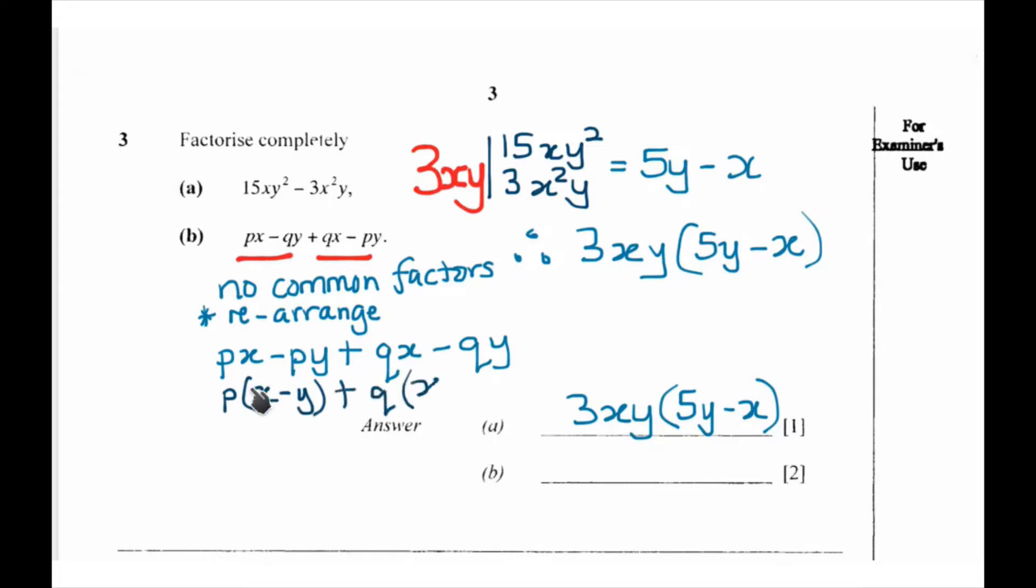So here the common is p - we'll remain with x minus y. Plus plus does not affect the sign, so plus q(x - y). If we have two brackets that are equal, we consider them as one and take what is outside and put them in their own bracket. Like in this case, it's (p + q)(x - y).